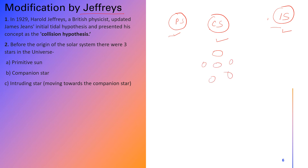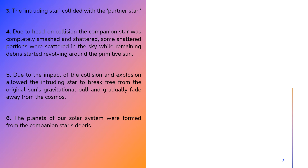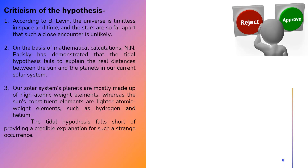The collision was so catastrophic that the primitive sun's gravity had no effect on the intruding star, which then moved away from the cosmos in different directions. The fragments of the companion star started to revolve around the sun, and after millions of years those fragments formed our planets. This is the collision hypothesis — the modified version of the tidal hypothesis.